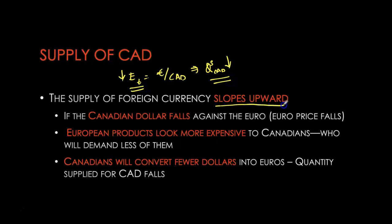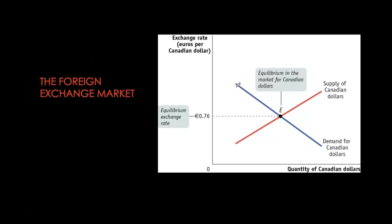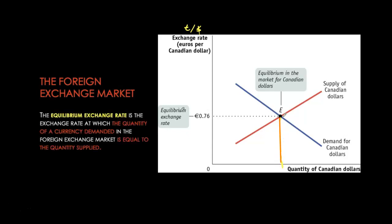Putting the two together: we have the downward sloping demand curve and the upward sloping supply curve for the Canadian dollar. The price on the y-axis is in terms of euros per Canadian dollar — higher price means appreciation, lower price means depreciation. Equilibrium is where quantity supplied exactly equals quantity demanded, i.e., where the two curves intersect. In this example, the equilibrium exchange rate is 0.76 euros per Canadian dollar.